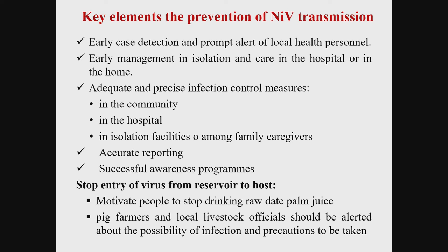Key elements of Nipah prevention include: early case detection, prompt alert to local health personnel, early management in isolation at hospital or home, adequate infection control measures in the community and hospital, accurate and acute reporting, and successful public awareness. Regarding palm sap collection: it should be collected in a container with a narrow mouth so bats cannot enter it, and should be used after boiling or distillation. Pig farmers and local health officials should be alerted about the possibility of infection.